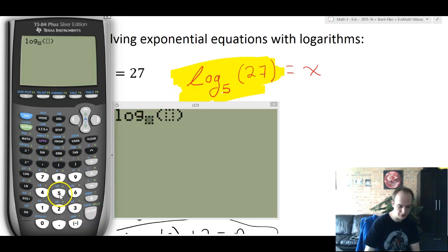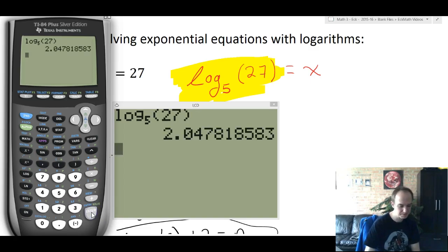And you really do just type in the numbers that we put, log base 5 of 27. Now we said this, we expected this to be a little bit more than 2. Let's see what we get. 2.047818583.